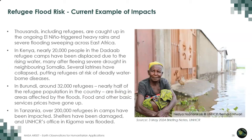Currently in East Africa, thousands including refugees are caught up in ongoing heavy rains and severe flooding. This has resulted in secondary displacements of people who have already been displaced, now having to relocate to places of safety. For example, in Kenya, nearly 20,000 people in the Dadaab refugee camps have been displaced due to rising water after several weeks of torrential rains. In Burundi, about 32,000 refugees are living in areas affected by flooding. In Tanzania, the situation is also serious — over 200,000 refugees in the camps have been impacted by flooding, and even the UNHCR office in Kigoma was badly affected.